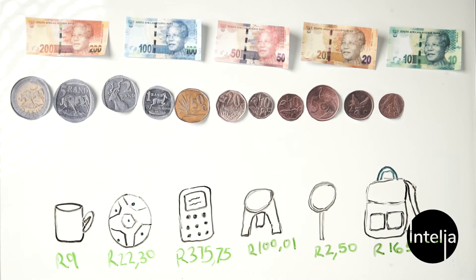For every object or good you want to purchase, you purchase it at a price. The price is the value of that object. Here I've drawn different examples with their prices, and I'm going to teach you how to use money — how to add it up and how to buy what you want with the amount of money you have.